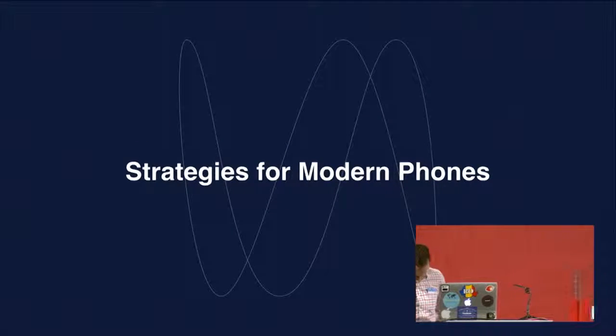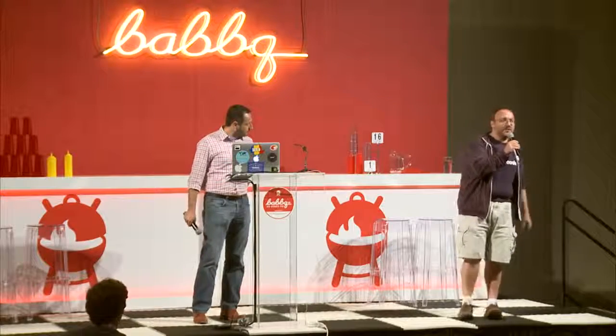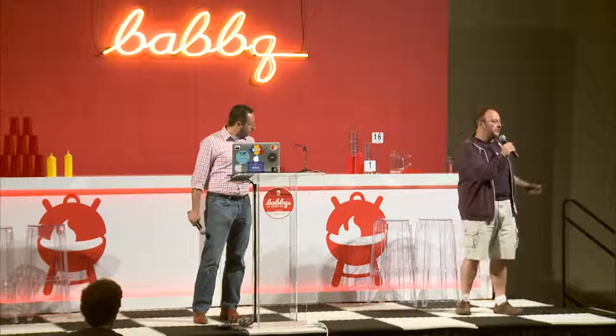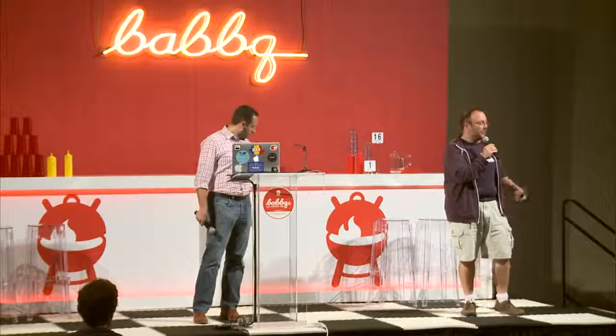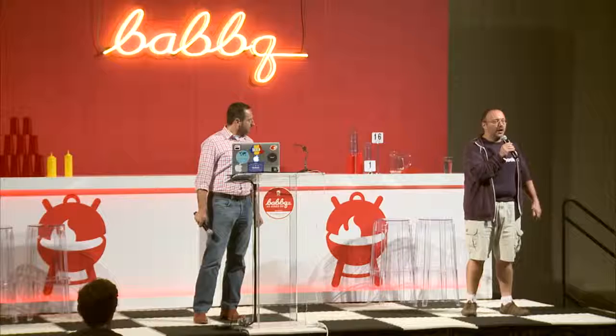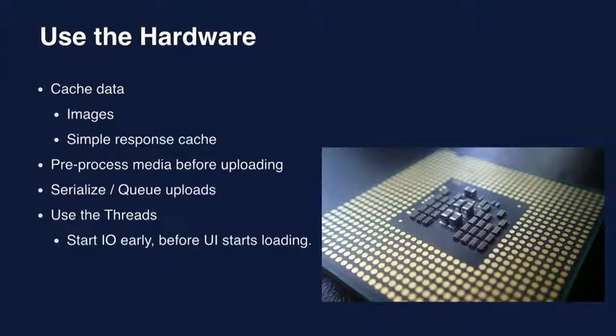When we think about how we address the network issue, we break it down into different classes. One is strategies for modern phones — where the phone is not a limitation, but the network is. The other is the situation where your phone is actually a limitation. We'll start with strategies for modern phones — phones that have storage, pretty good CPU, and generally look like the desktop computers of five years ago or better.